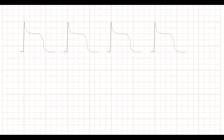To explain this, we take four cells with the same action potentials for every cell. There are two electrodes, one negative and one active positive electrode. In a resting state, all cells have positive charge, so there is no difference in electric potentials, and the active electrode registers this as an isoelectric line.